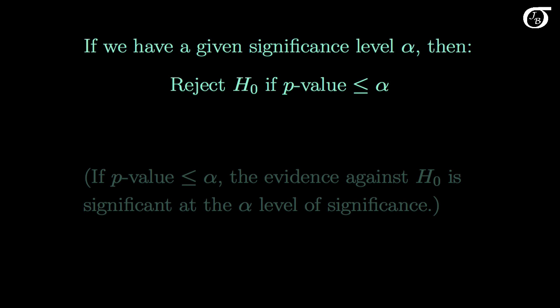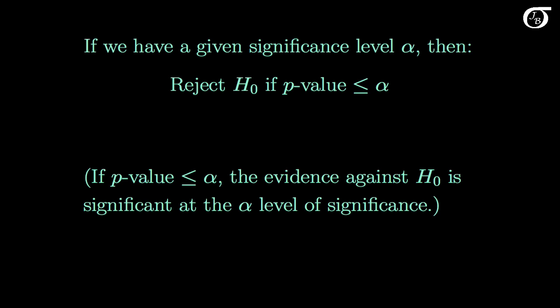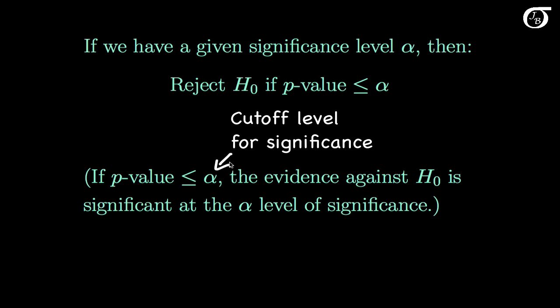It is important to note that the smaller the p-value, the greater the evidence against the null hypothesis. But how small does the p-value have to be before we can reject the null hypothesis, or say that there is significant evidence against it? If we have a given significance level alpha, then we can reject the null hypothesis if the p-value is less than or equal to alpha. We can call this alpha value a cutoff level for significance.